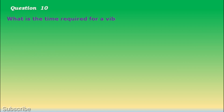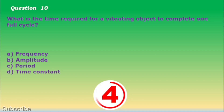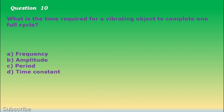Question number 10. What is the time required for a vibrating object to complete one full cycle? a. Frequency, b. Amplitude, c. Period, d. Time constant. The correct answer is letter c. Period.